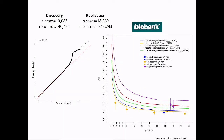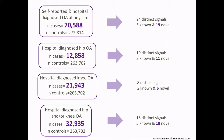We went ahead and did both self-reported and hospital-diagnosed in the full release of the UK Biobank data, which has recently been published. Through this we were able to more than double the number of established osteoarthritis loci — that number is now close to 90.